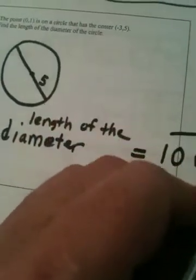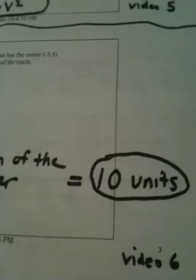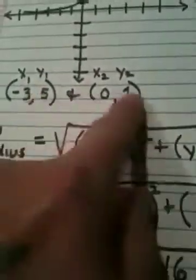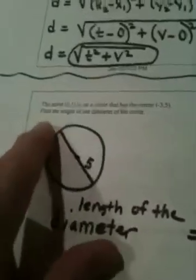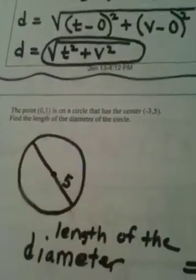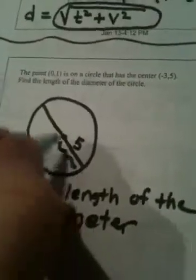So what this problem shows you is, to me, an intelligent use of the distance formula. We use the distance formula to find the length of the radius. That's what we did by putting it with these two points. From the center to the boundary gives me the length of the radius. But now, to answer the question, the length of the diameter is twice that. So if this is 5, twice that is going to be 10.